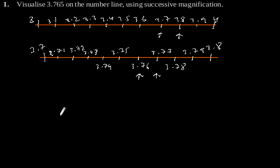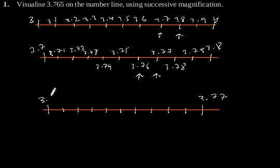So draw again one number line and again divide it into 10 equal parts. So this is our 3.76 and this is our starting point that is 3.76. Now again mark each points.